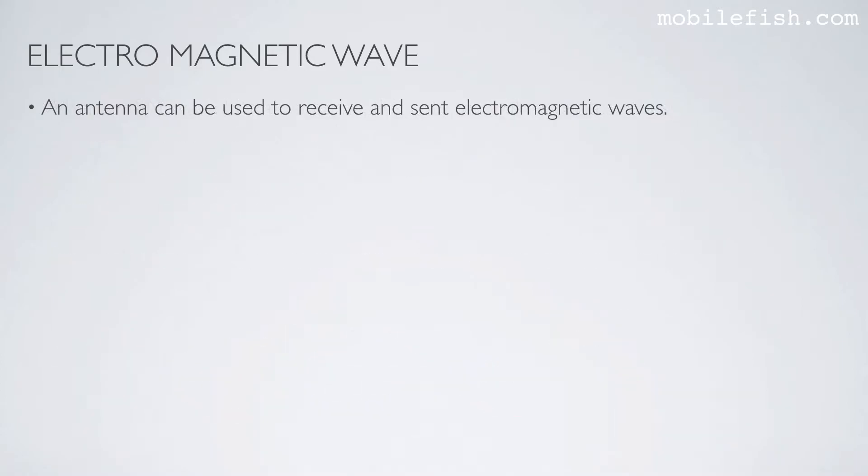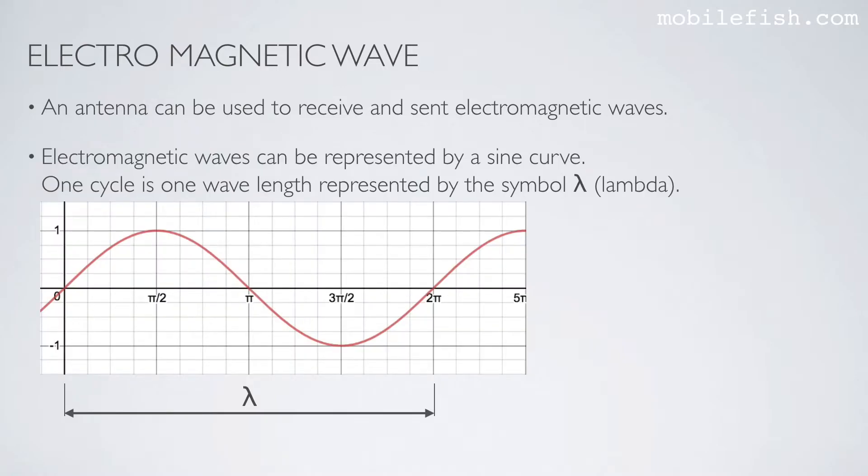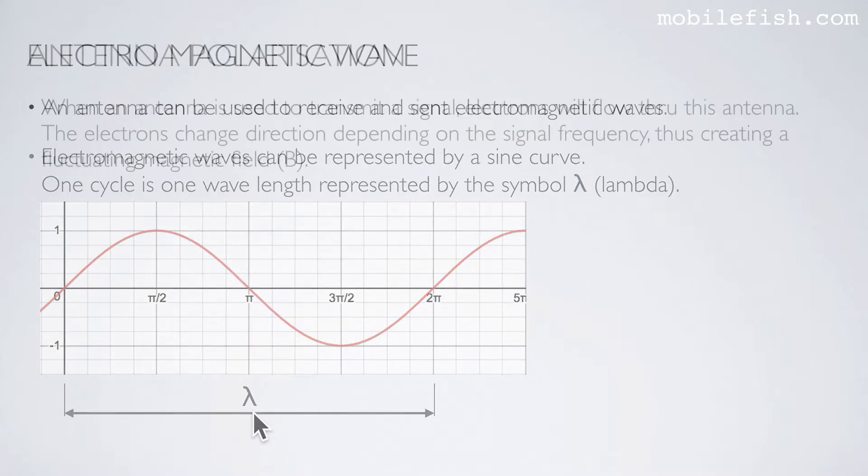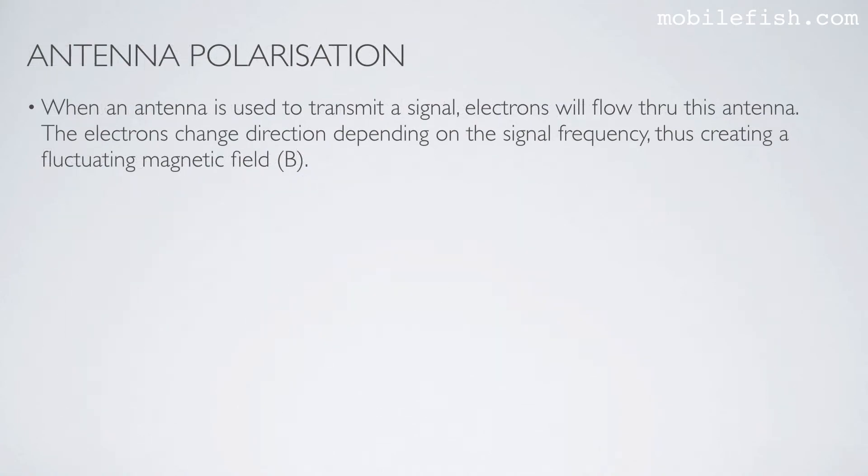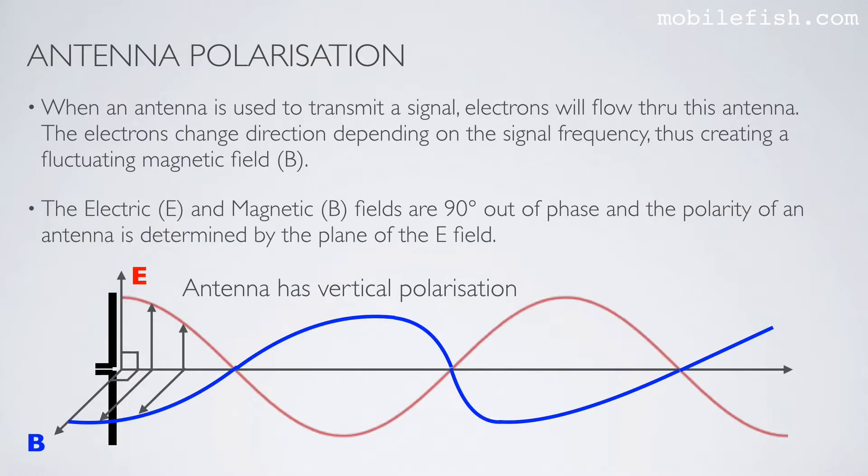An antenna can be used to receive and send electromagnetic waves. Electromagnetic waves can be represented by a sine curve. One cycle is one wavelength, represented by the symbol lambda. The electrons will change direction depending on the signal frequency, thus creating a fluctuating magnetic field. The electric and magnetic fields are 90 degrees out of phase, and the polarity of an antenna is determined by the plane of the electric field.